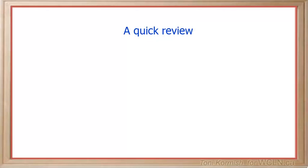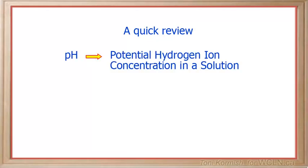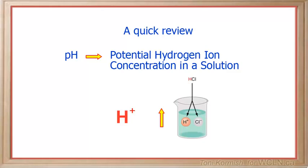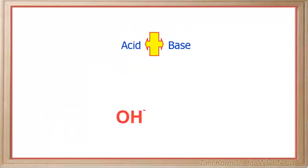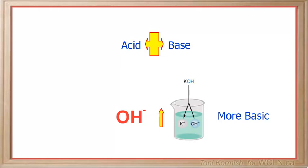To give a quick review: pH refers to the potential hydrogen ion concentration in a solution. The symbol for the hydrogen ion is capital H with a positive sign as a superscript to it. As we increase the concentration of hydrogen ions in a solution, it becomes more acidic, and we recognize an acid as a formula with the hydrogen at the front. A base is the opposite of an acid, and the symbol for the hydroxide ion is capital O, capital H, with a negative sign as a superscript to it. As we increase the concentration of the hydroxide ion in a solution, it becomes more basic, and we recognize a base as a formula with the hydroxide ion at the back.